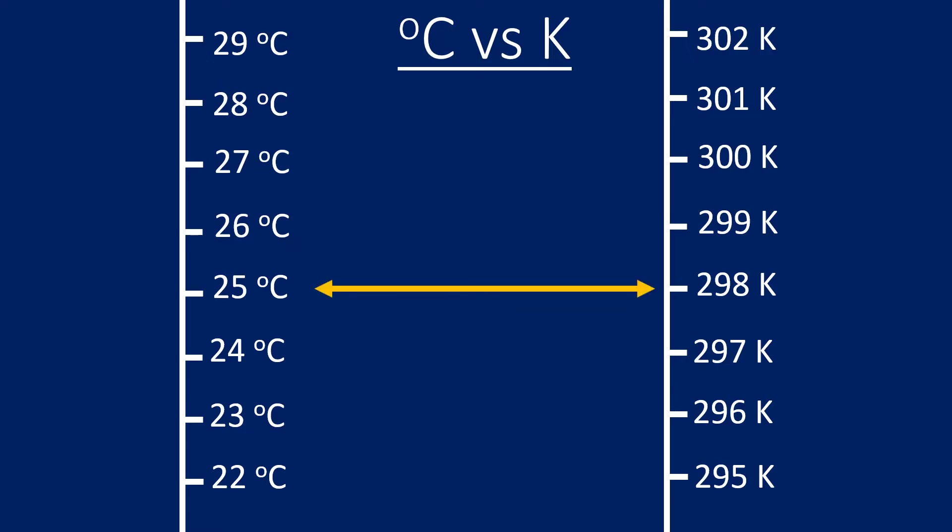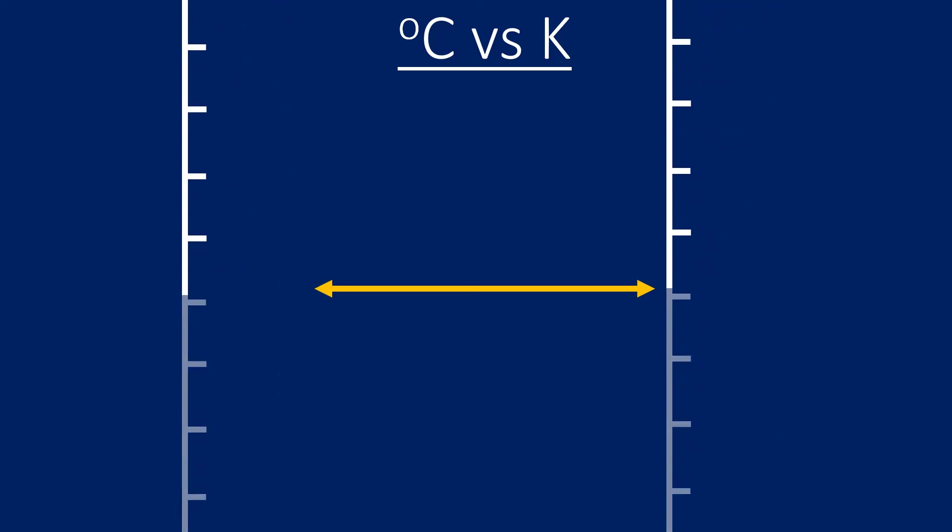So 298 Kelvin is the same as 25 degrees Celsius. To convert from degrees Celsius to Kelvins, you simply add 273, and you can see that's the same all the way up the scale. Kelvins is just 273 on top of the degree Celsius, and what that means is if we go to the very bottom of this scale,